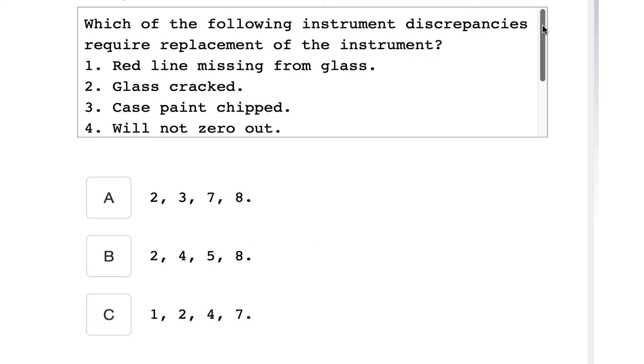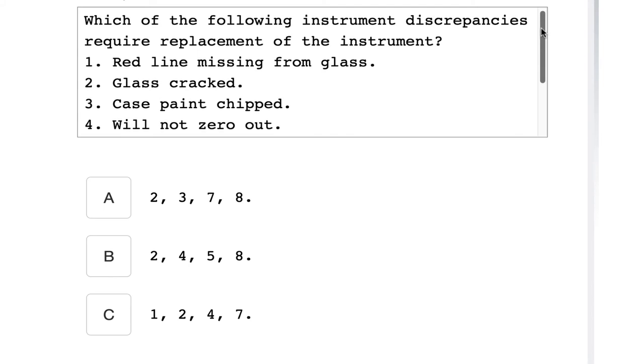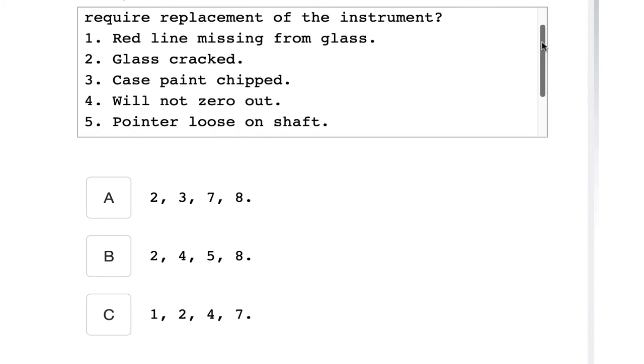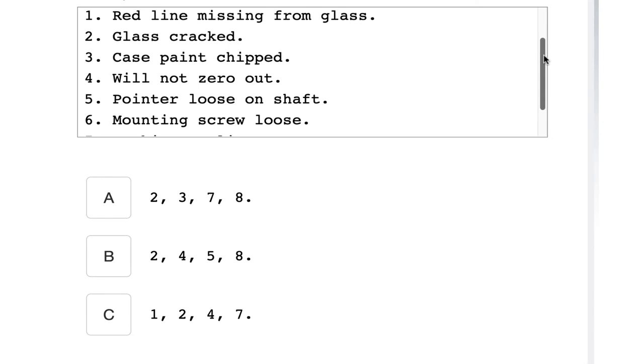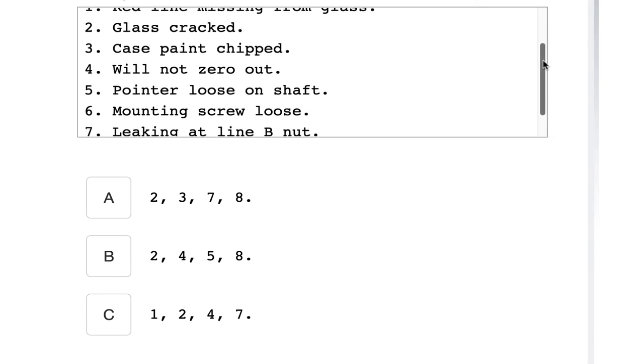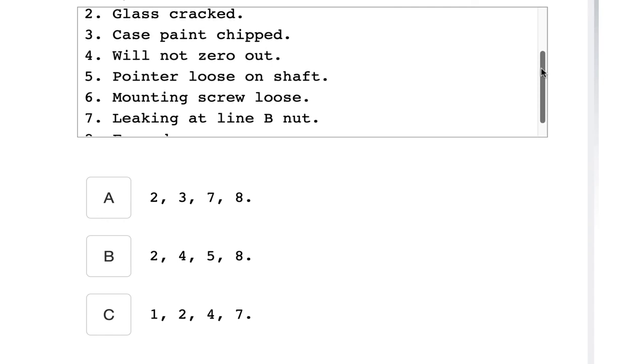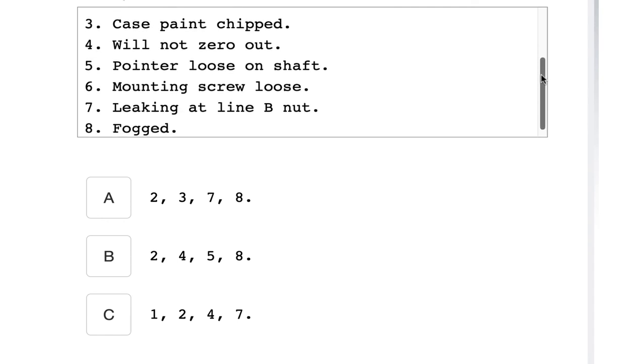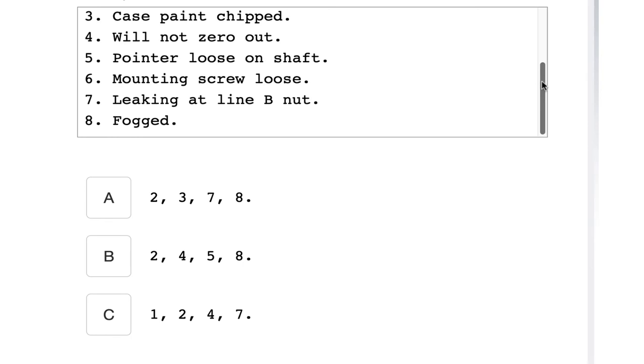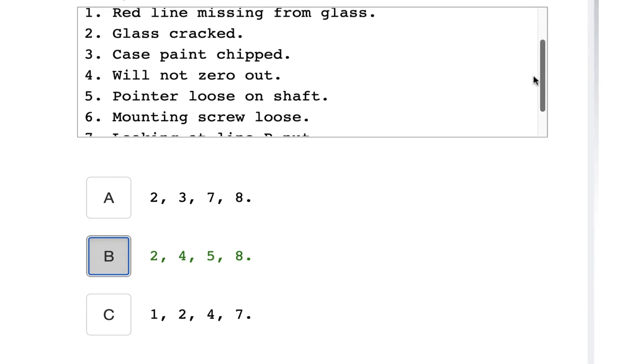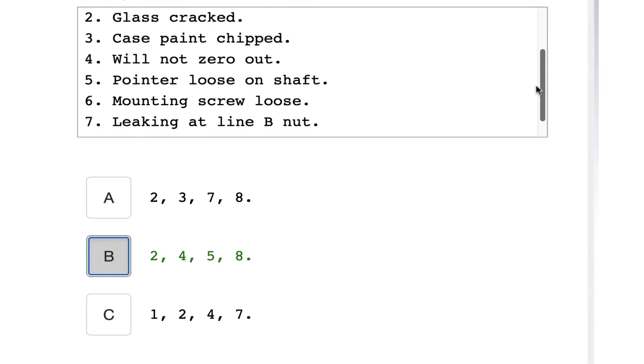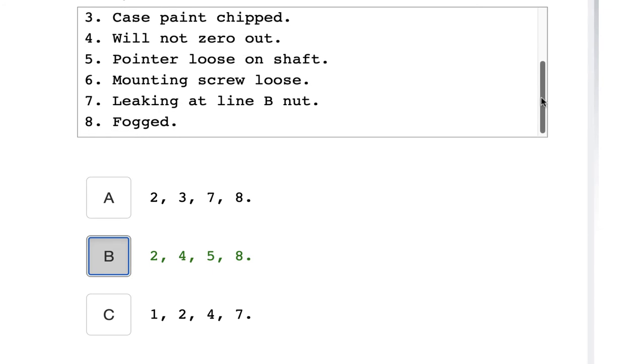Which of the following instrument discrepancies require replacement of the instrument? One, red line missing from the glass; two, glass cracked; three, case paint chipped; four, will not zero out; five, pointer loose on shaft; six, mounting screw loose; seven, leaking at line B nut; eight, fogged. It will require replacement for two, glass cracked; four, will not zero out; five, pointer loose on shaft; and eight, fogged.